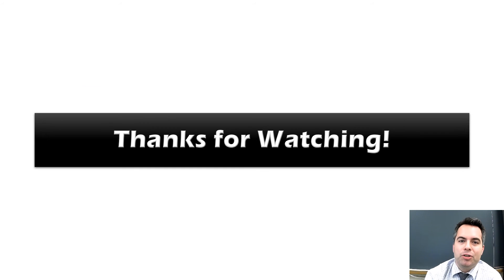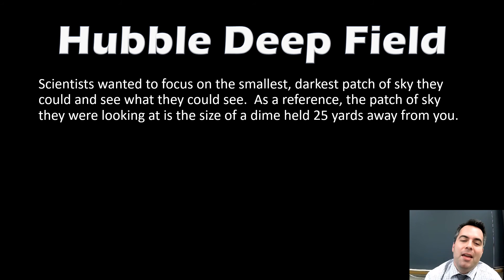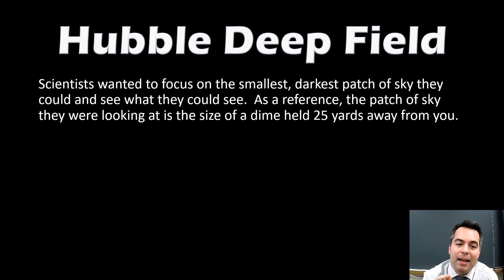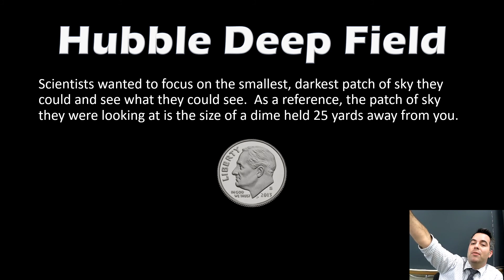Thanks for watching — that's been about seven minutes, but I want to give you a little taste of astrophysics. It's not in the curriculum but I'll sprinkle it in every once in a while. You may have heard of the Hubble Telescope — it's a large telescope orbiting Earth right now. Scientists wanted to focus on the smallest, darkest patch of sky they could find and see what was there. As a reference, the patch they looked at is the size of a dime held 25 yards away from you. They picked a spot that was super dark, not pointing at anything obvious.